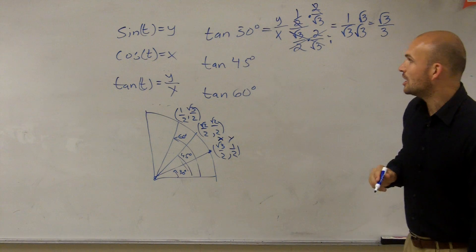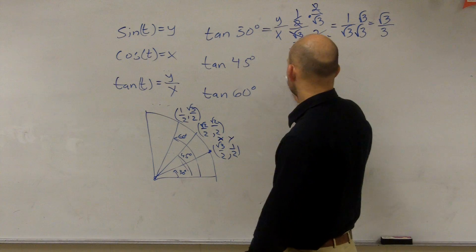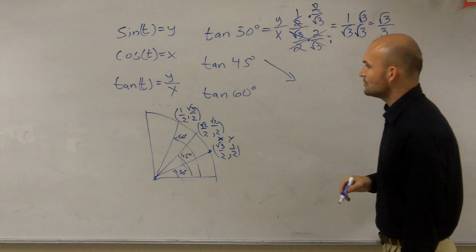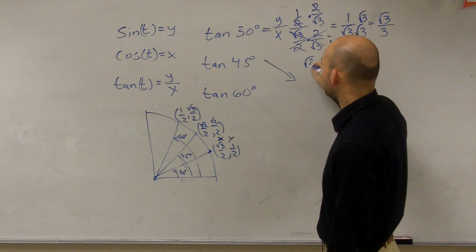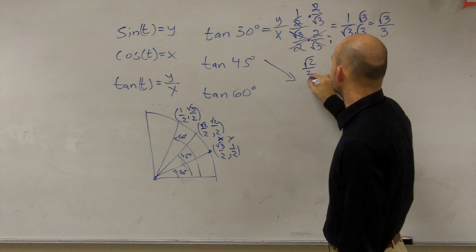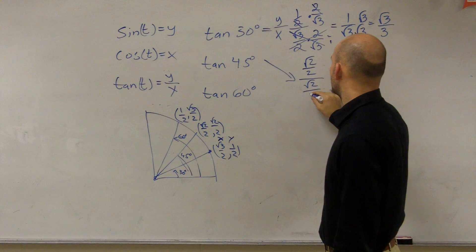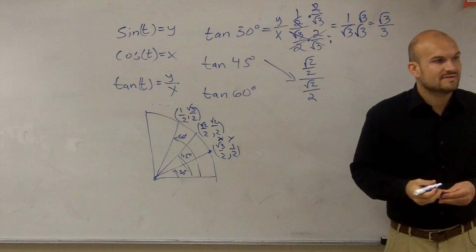Let's look at the tangent of 45. Kind of running out of some room here. But the tangent of 45 is going to be the y, which is square root of 2 over 2, divided by the square root of 2 over 2. Ladies and gentlemen, 5 divided by 5 is what?